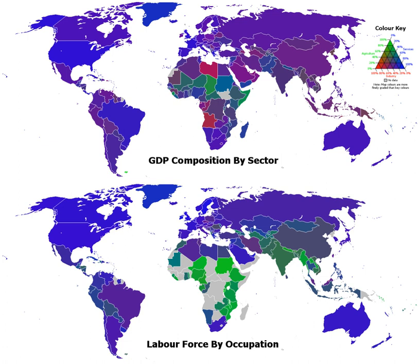The Industrial Revolution led to the development of factories for large-scale production with consequent changes in society. Originally the factories were steam-powered, but later transitioned to electricity once an electrical grid was developed. The mechanized assembly line was introduced to assemble parts in a repeatable fashion, with individual workers performing specific steps during the process. This led to significant increases in efficiency, lowering the cost of the end process.